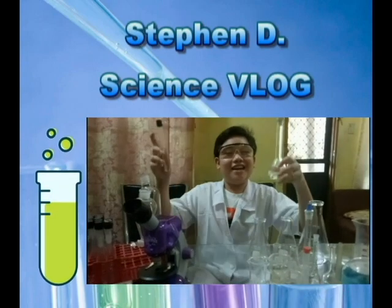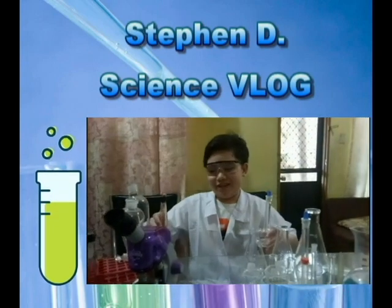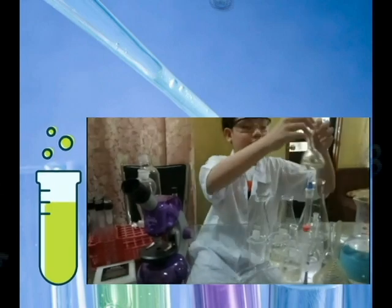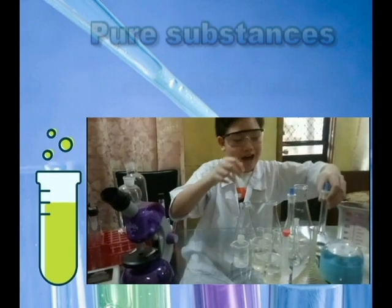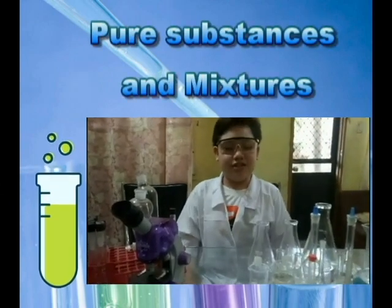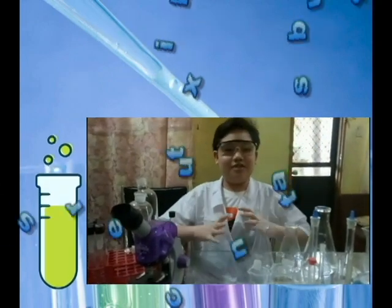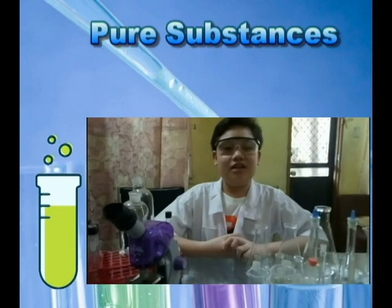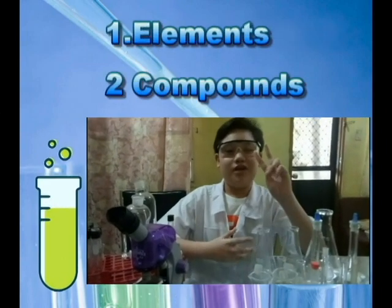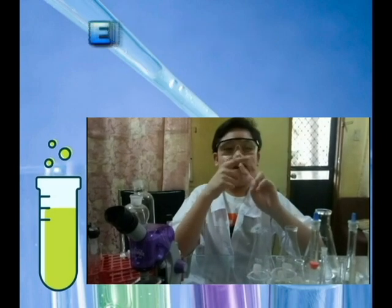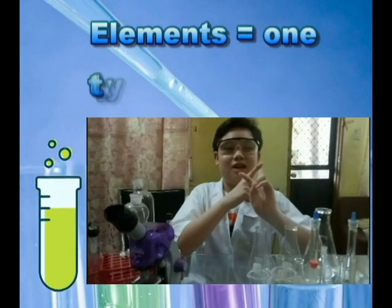Welcome to Stephen D. Today I'm here to talk about pure substances and mixtures. Pure substances have only one kind of atom and are classified into two types: elements and compounds. Elements have one type of atom.